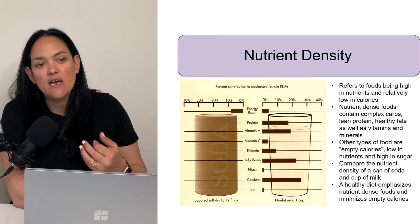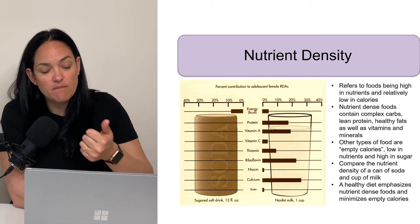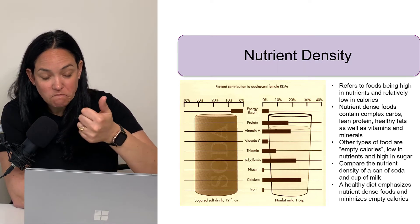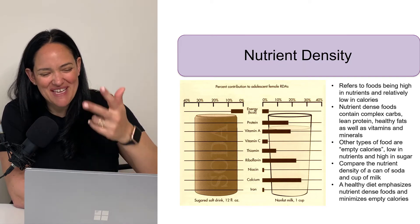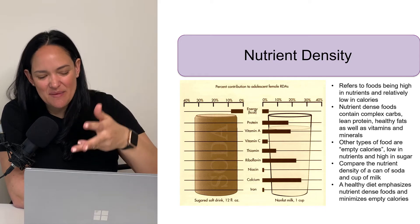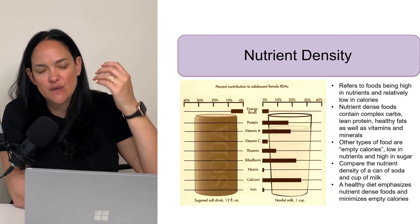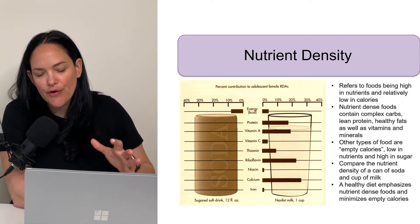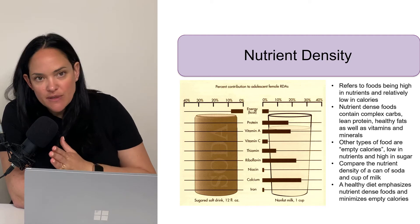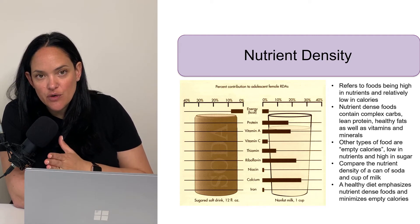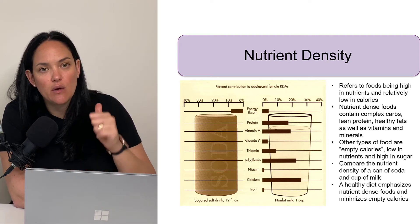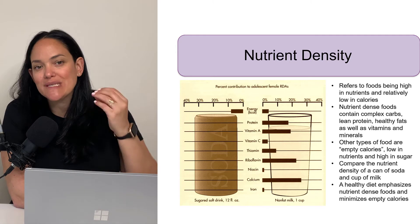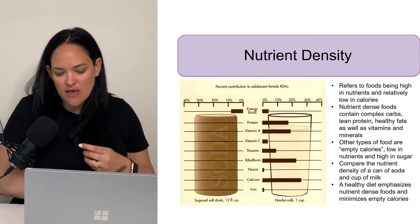If I consume 100 calories of milk, I'm getting vitamin D, calcium, magnesium, lactose, certain lipids, and water. If I'm consuming 100 kilocalories of Coca-Cola, I'm getting water and sugar — that's it. So it's less nutrient dense.